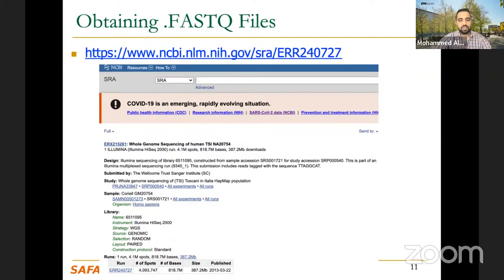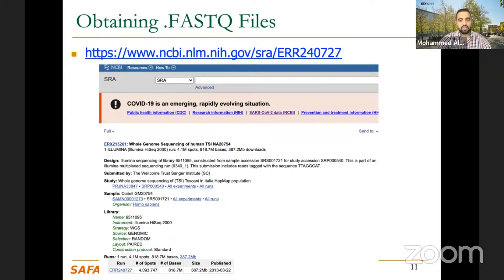Where do you get the sequencing data? You have two options. Either you simulate it — there are a lot of simulation tools that are software you can download, run, and get reads. Or you can get data from publicly available databases such as SRA from NCBI or NIH, a well-known database for sequencing data. You can access a link, click on a run, and get the FASTQ file. Remember, in the reference genome it's FASTA format, but here in the reads it's FASTQ. They are different formats because the nature of the data is different. In the reference genome, each chromosome has a full sequence of data. But here, each piece has a sequence of data, so you will see a lot of pieces in this file.